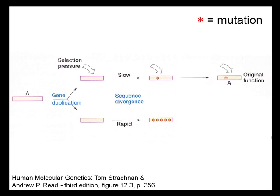The original gene A maintains its function because of the conservative selection pressures acting upon it. The copy gene, however, can do either of two things. One, it acquires too many deleterious mutations and degenerates into a non-functional pseudogene, designated PsiA. Or two, it will acquire mutations that lead to a difference in expression or a different property that is considered advantageous and become a new gene, designated A2. This new gene A2 will have a related function to the original gene A.